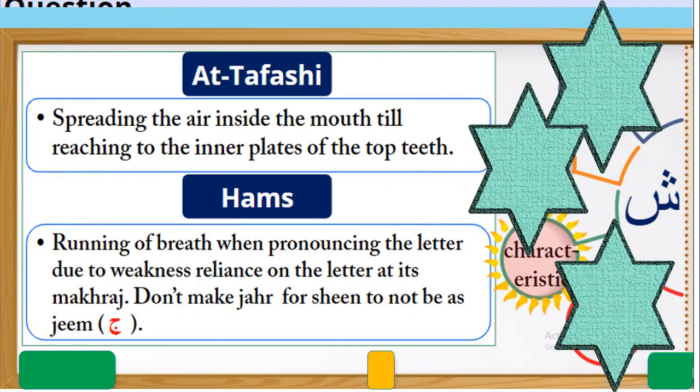Number two: running of breath when pronouncing the letter, because the letter is weak, not strong. Don't make jah for Sheen, to not make it sound like Asgim. If you make jah, it will become jah — so it's ash, not aj.